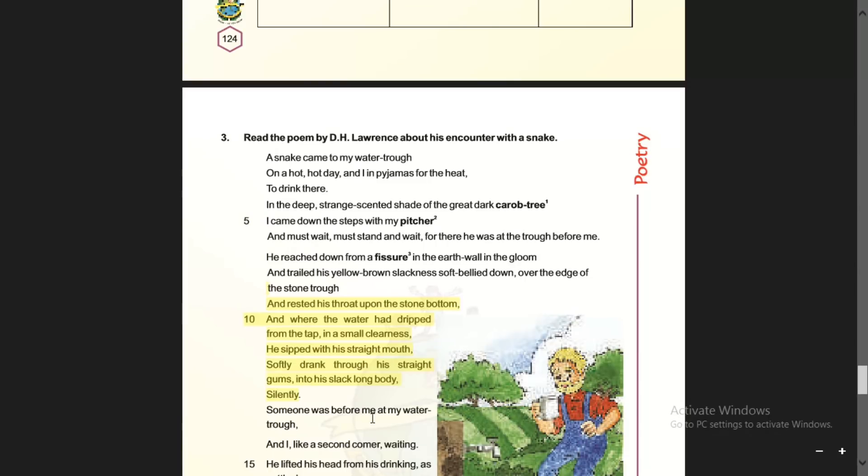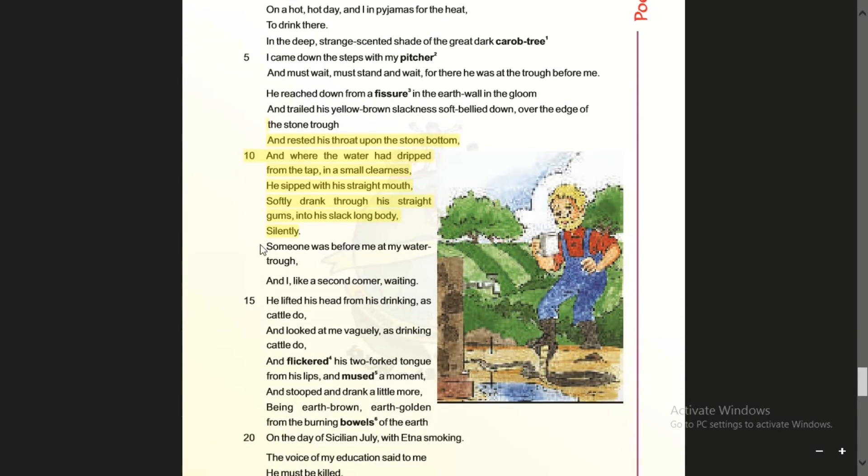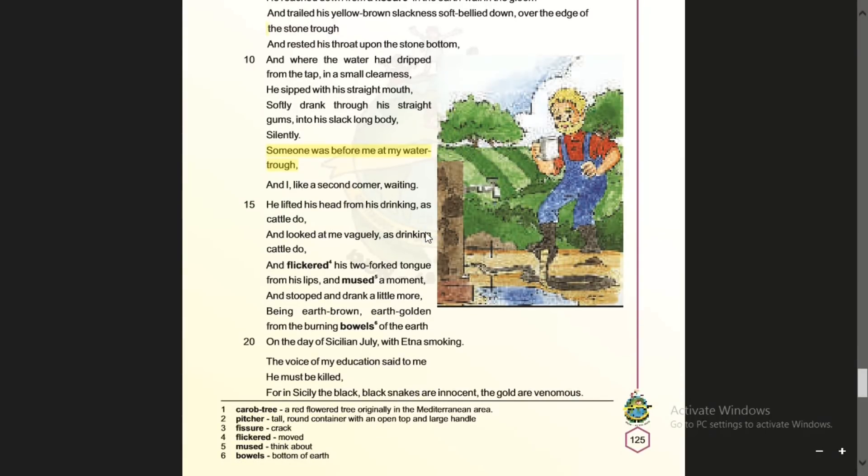Someone was before me at my water trough. The poet was standing there seeing the whole scene, and he feels like the snake came first and he is a second comer waiting. He needs to wait because the snake is drinking water.